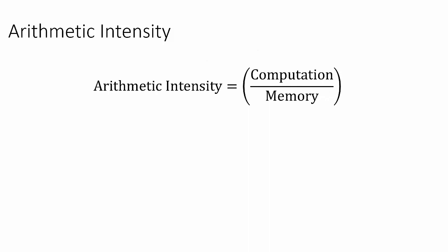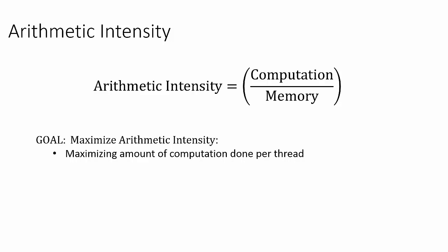Let's now introduce a concept called arithmetic intensity, which is defined as the amount of computation performed per amount of memory accessed. To increase performance of our program, we want to maximize arithmetic intensity. This can be done in two ways. We can increase the numerator by maximizing the amount of operations done per thread, or we can decrease the denominator by minimizing the amount of time spent on memory retrieved per thread.